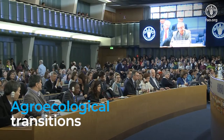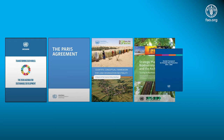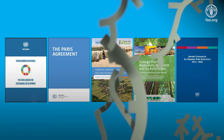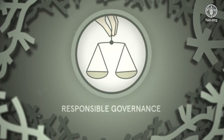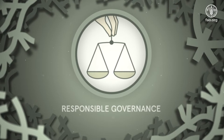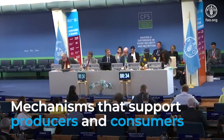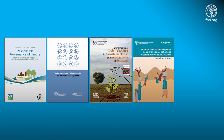Agroecological transitions demand the development of effective and innovative policies, institutions and markets that enable and support transformative change. Responsible governance from communities to nations embodies transparent, accountable and inclusive mechanisms that support producers and consumers. Responsible governance also enhances social inclusion and fair practices.